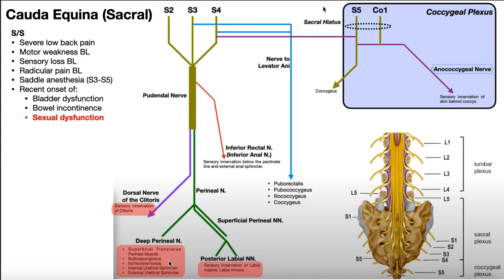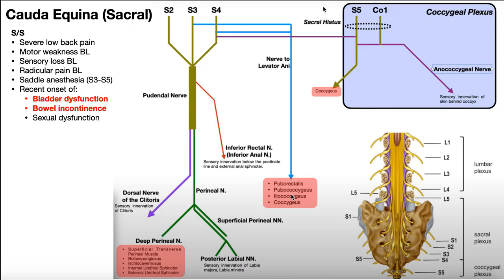With cauda equina syndrome affecting the lower sacral nerve roots, you can have sexual dysfunction in both sensory and motor domains. Bowel and bladder dysfunction also occur — the nerve to levator ani comes from S3 and S4, innervating puborectalis, pubococcygeus, iliococcygeus, and coccygeus. The first three make up the pelvic floor, and if the pelvic floor is dysfunctional, that leads to bladder dysfunction and incontinence. The internal and external urethral sphincters also get their control through S3 and S4 and some S2. So if these nerve roots are not working, you can end up with dysfunction in all three areas: bladder, bowel, and sexual.